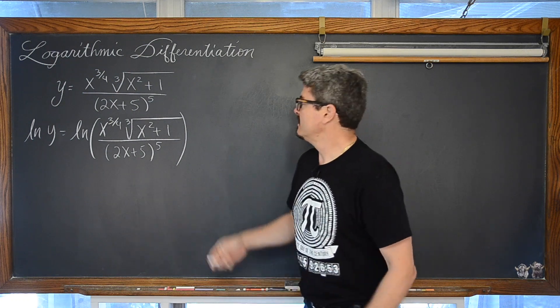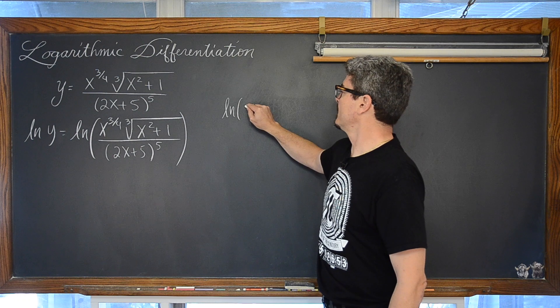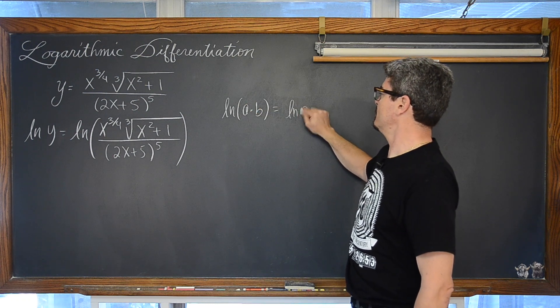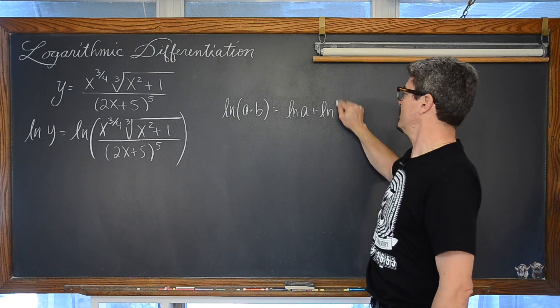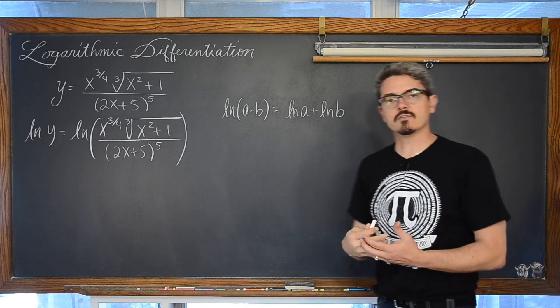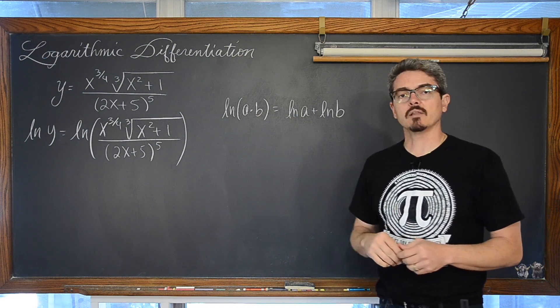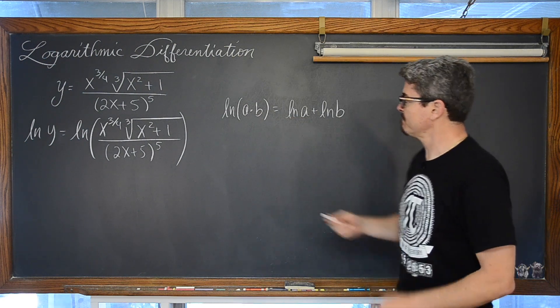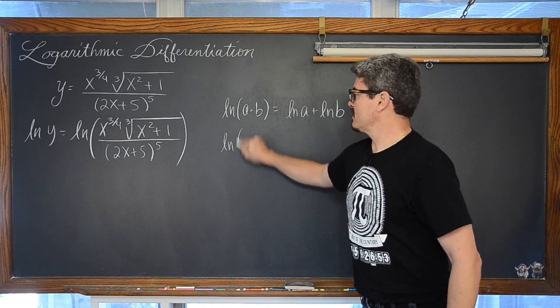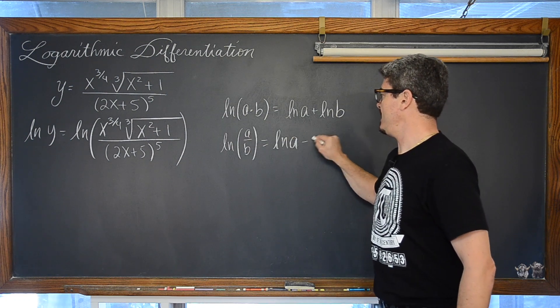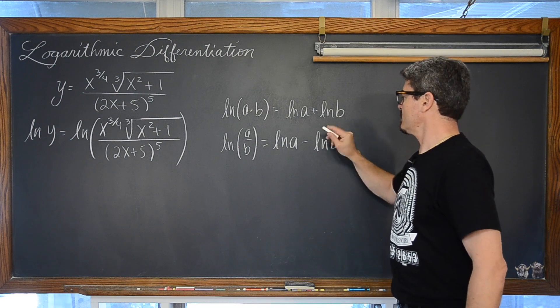So let's not forget the natural log of a times b is equal to the natural log of a plus the natural log of b. Remember logarithms give us exponents and you add exponents when you are multiplying under a like base. In this case the like base is log base e. And the natural log of a divided by b is the natural log of a minus the natural log of b.